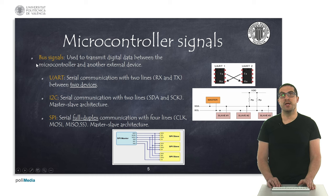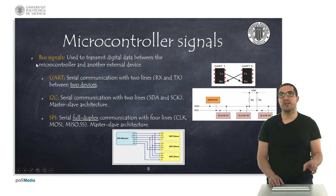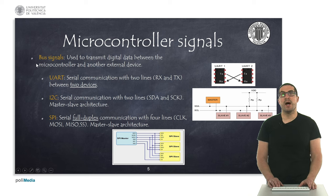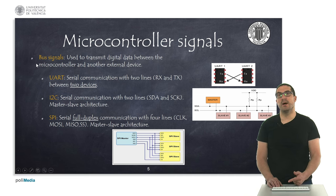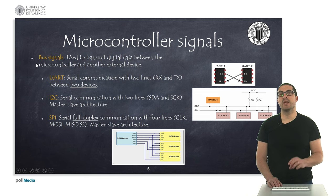Then we have I2C, a serial communication protocol that uses a data line and a clock line. It uses a master-slave architecture where the master handles the communications and the slaves receive specific packages and respond back to the master. We also have SPI communication, which is a full-duplex protocol using a clock, a data signal for the master, and a data signal for the slave. It also has a slave selection signal, so we can have multiple slaves and select specifically which one to communicate with.